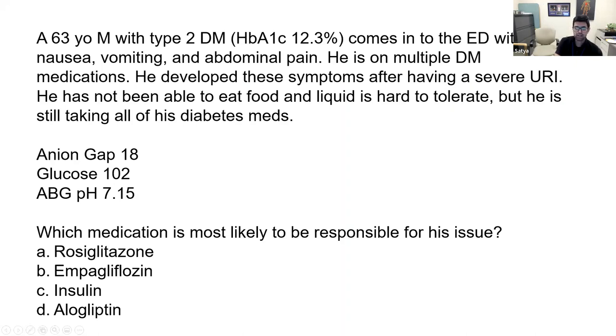His anion gap is 18, glucose is 102, and pH on an ABG is 7.15. Which medication is most likely to be responsible for his issue?